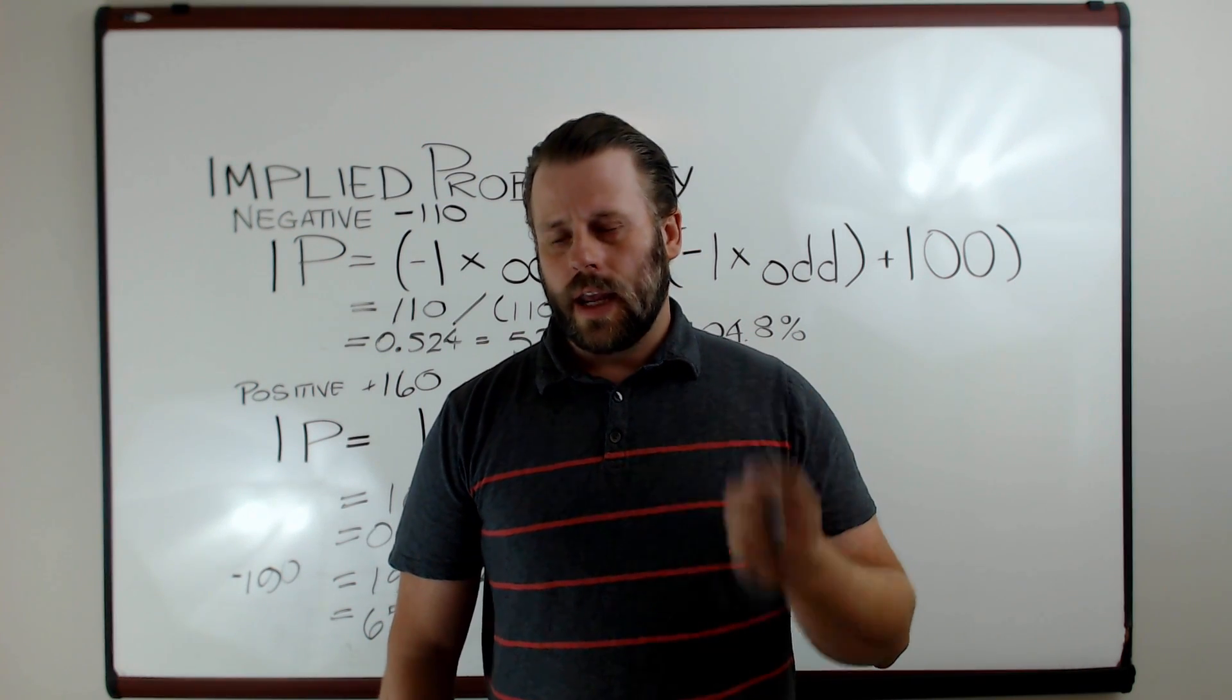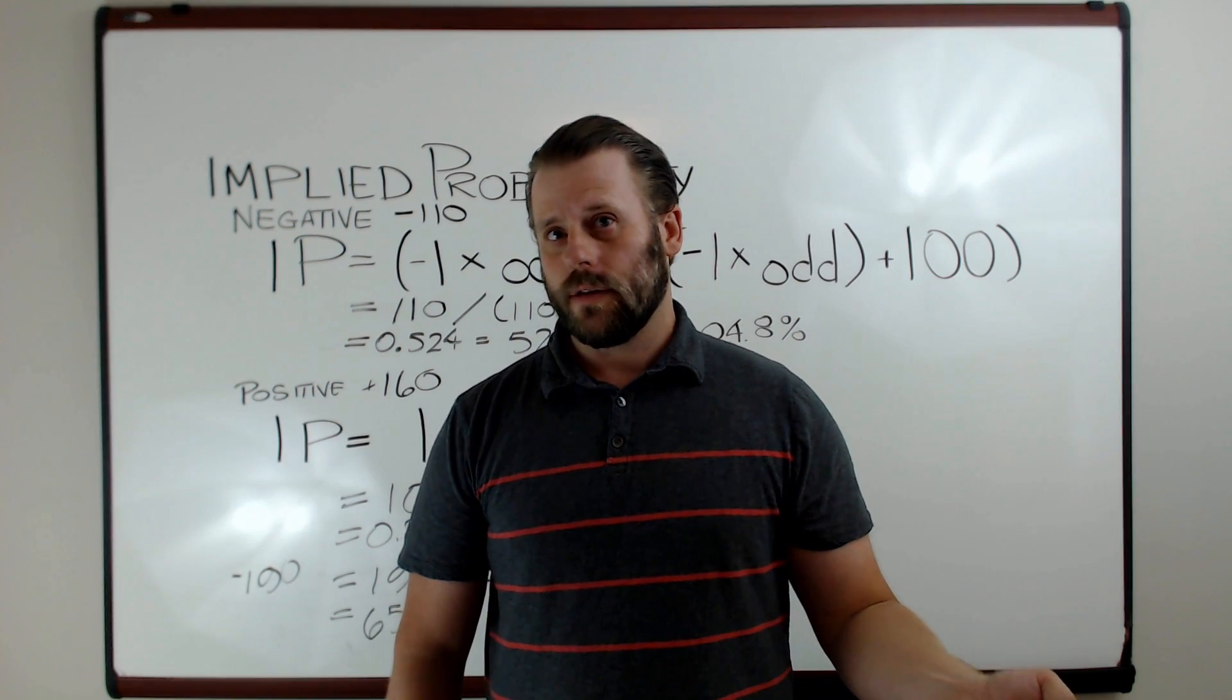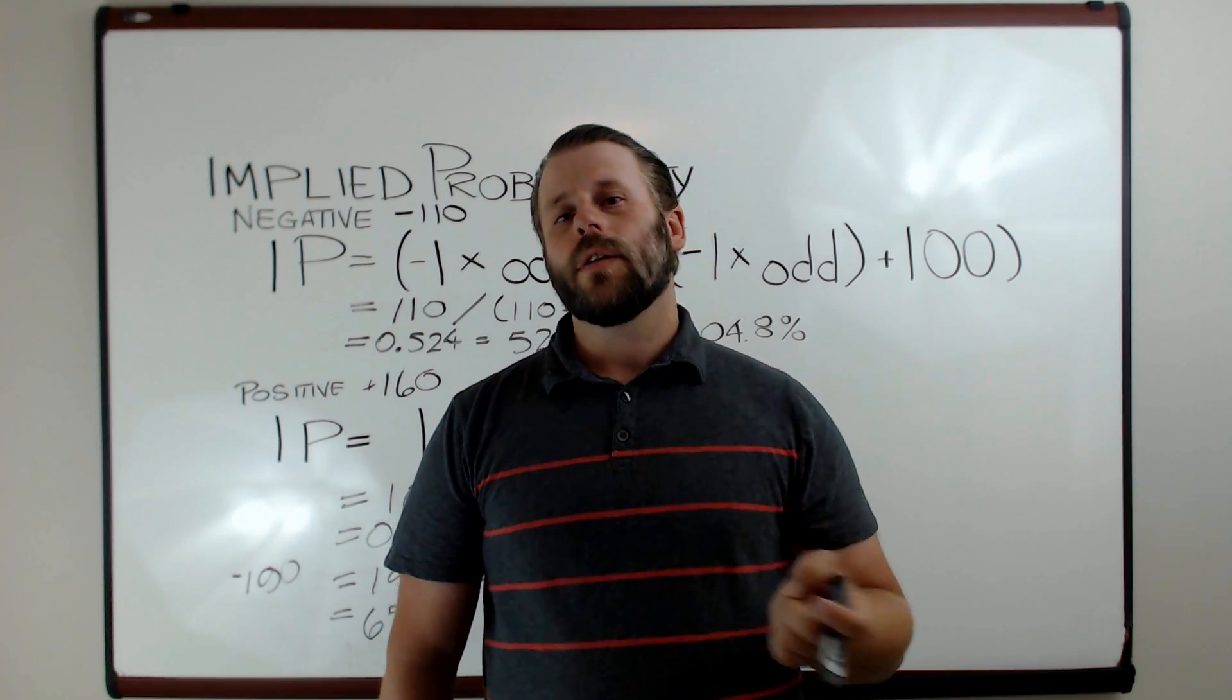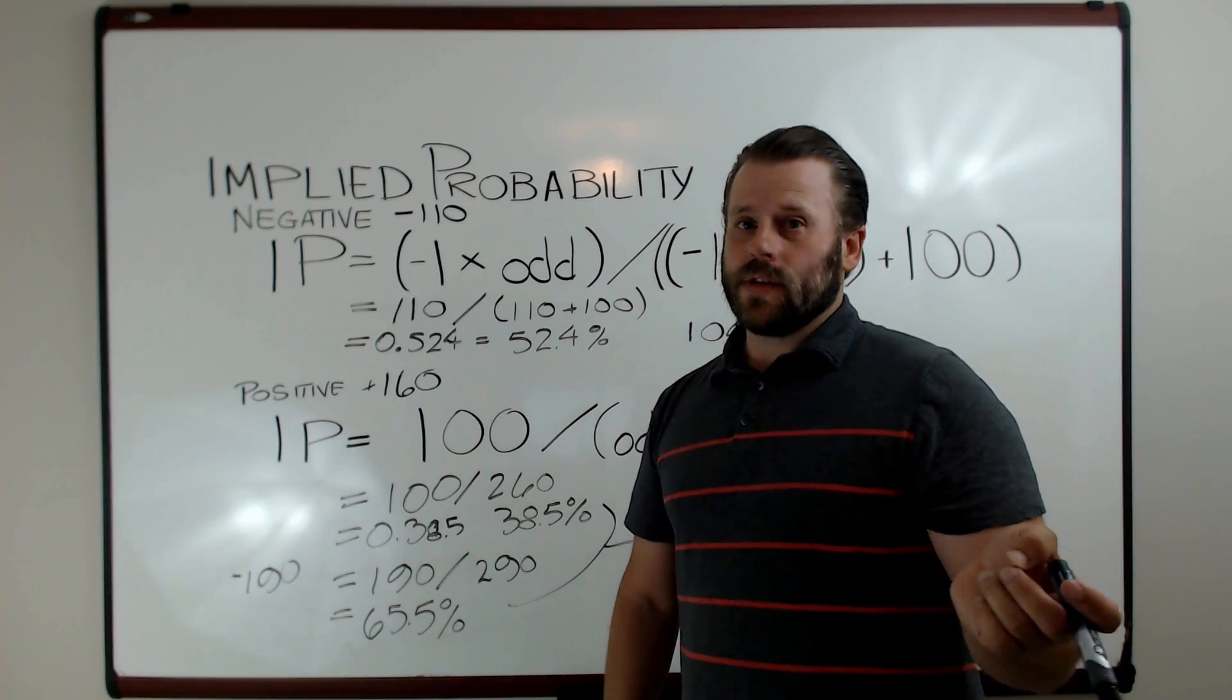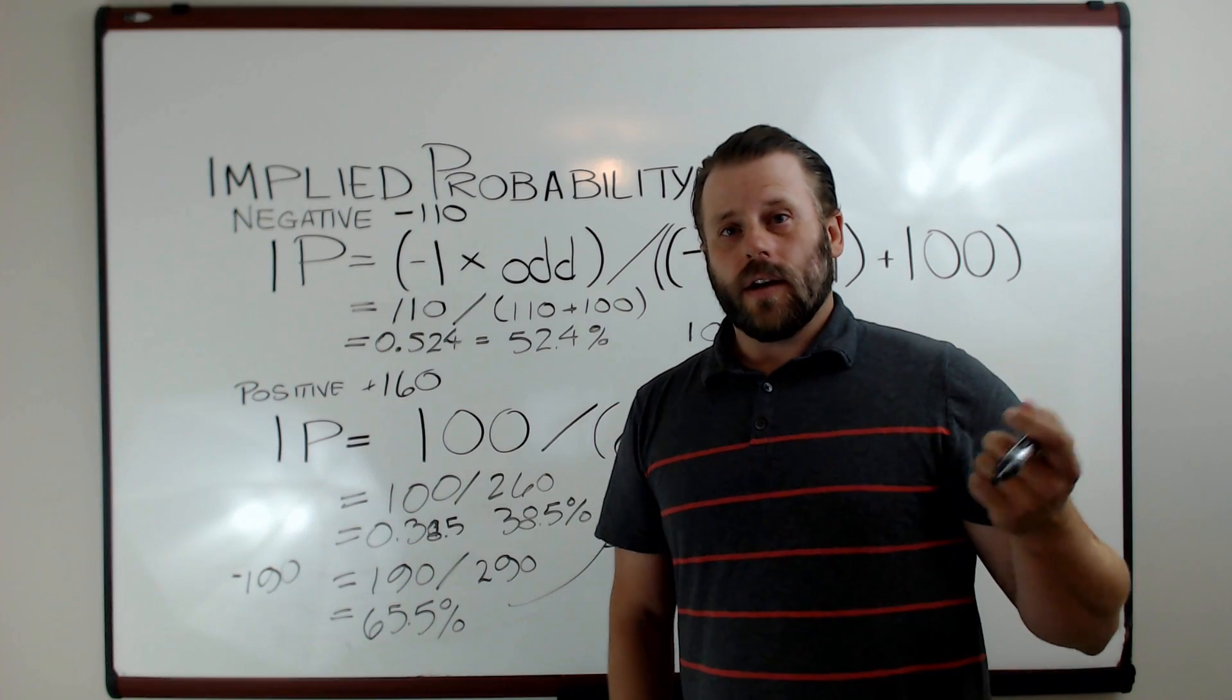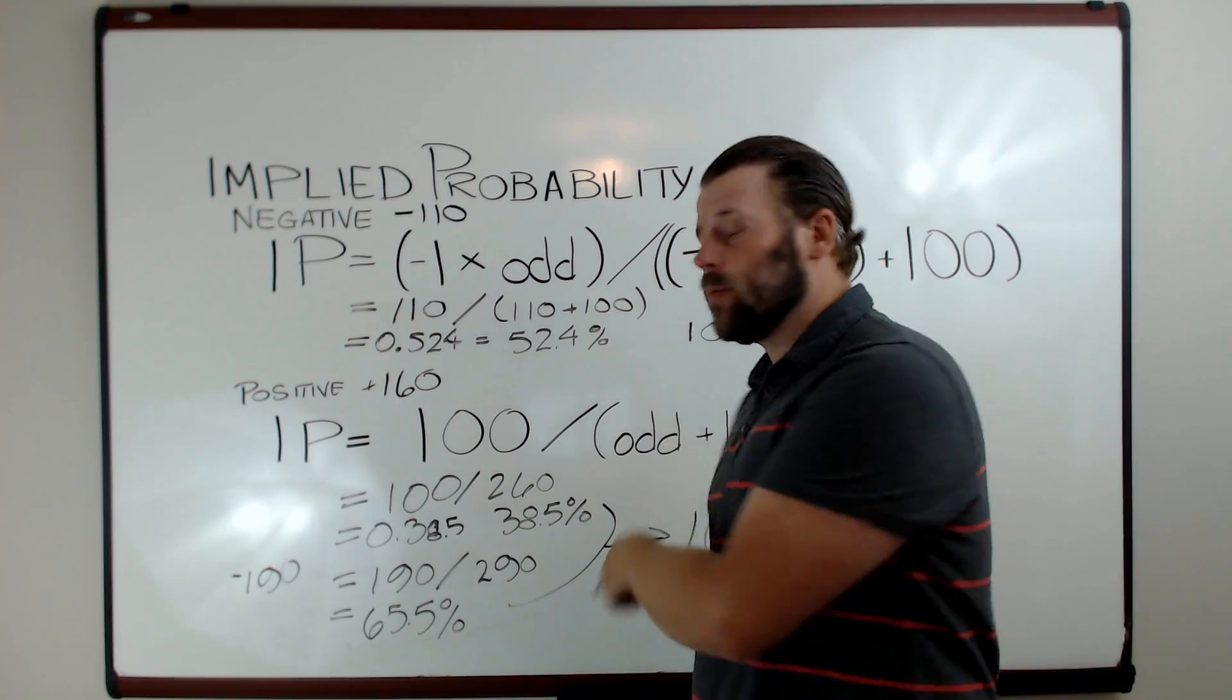I can't stress enough, anytime you're placing a bet, particularly a money line bet, go calculate out the implied probability, and you'll notice that your sportsbook's advantage over you fluctuates quite a bit. I've seen them as low as 0.87% versus as high as 4.95%.